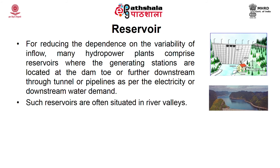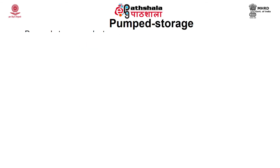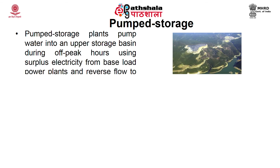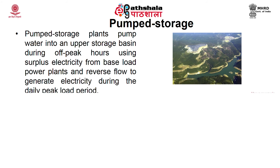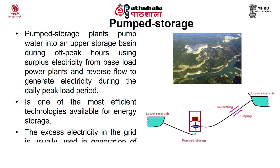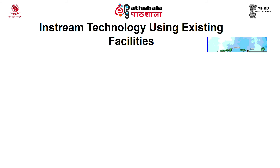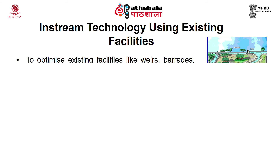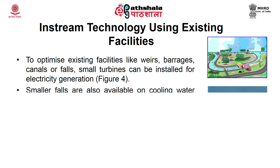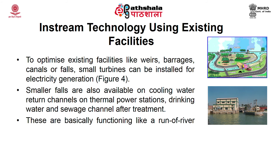Pumped storage plants pump water into an upper storage basin during off-peak hours using surplus electricity from base-load or renewable sources (wind or solar), then reverse the flow to generate electricity during peak demand. This is one of the most efficient energy storage technologies available. In-stream technology uses existing facilities such as weirs, barrages, canals, or falls to install small turbines for electricity generation, including cooling water return channels of thermal plants and drinking water or treated sewage channels, functioning essentially like a run-of-river scheme.